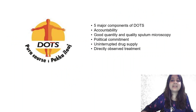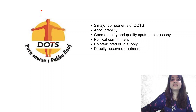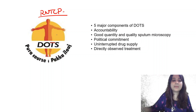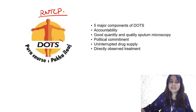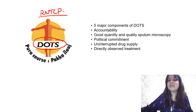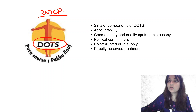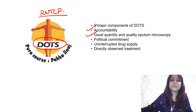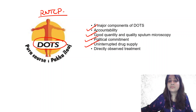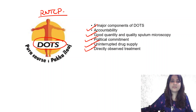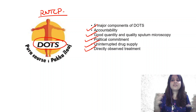Earlier the logo was RNTCP. Now the logo is that of DOTS — Directly Observed Treatment Short Course. DOTS has 5 components: accountability, good quality sputum microscopy, political commitment, uninterrupted drug supply, and directly observed treatment. You could be asked which of the following are components of DOTS.